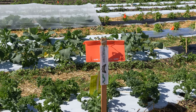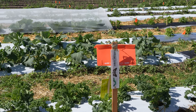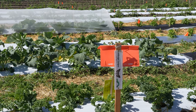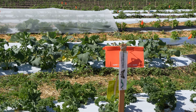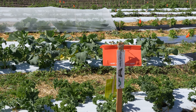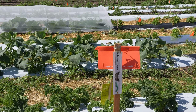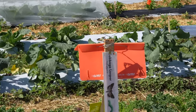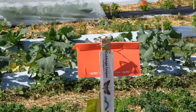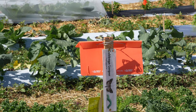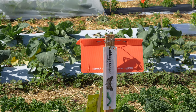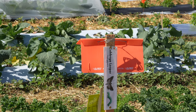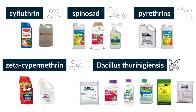Set up a pheromone trap to monitor adult cabbage looper moths and determine their population levels. This can help you anticipate and take action before significant damage occurs. If infestations are severe and other methods have not been successful, you may consider using chemical insecticides labeled for cabbage loopers.